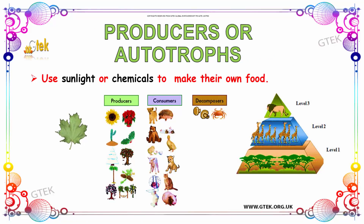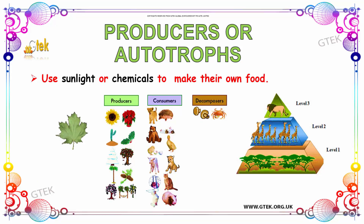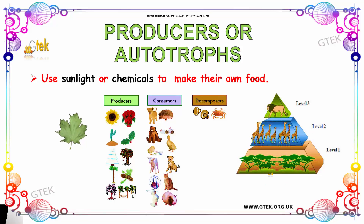Let us discuss about producers or autotrophs. Producers or autotrophs use sunlight or chemicals to make their own food. Here you can see the producers, consumers and decomposers, and the food chain is depicted.